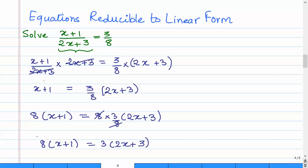So what we have is 8 times x plus 1 equals 3 times 2x plus 3. This is now a simplified form. You can simplify this further and do the usual operations of transposing and addition-subtraction to solve this equation. This was the longer method. The shorter method is this equation.